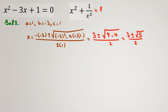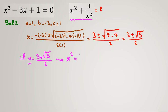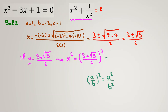For finding x squared plus 1 over x squared, take x equals (3 plus root 5) over 2. To find x squared, raise to the power of 2: x squared equals (3 plus root 5) squared over 4. Expanding using (a plus b) squared equals a squared plus 2ab plus b squared: 9 plus 6 root 5 plus 5, all over 4.